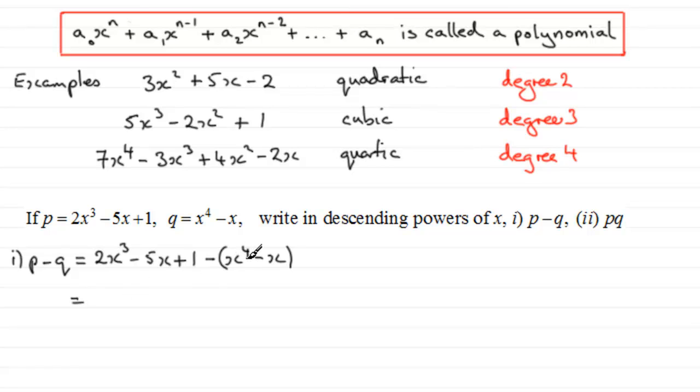When we expand this, we've got a minus 1 here, being multiplied by each of these two terms. So we're going to have 2x cubed minus 5x plus 1 as the first three terms. And then when we expand this, we get minus 1 times x to the 4 is minus x to the 4, and minus 1 times minus x is plus x. If we group up our terms, we've got to do it in descending powers of x, so we must start off with this term here, minus x to the power 4. That's our highest power. And then the next power will be this power 3 here, so that's going to be 2x cubed, so plus 2x cubed.